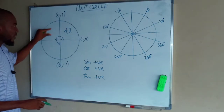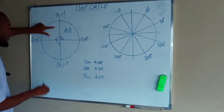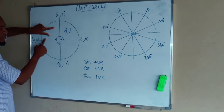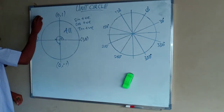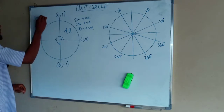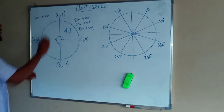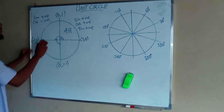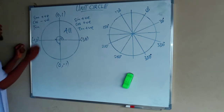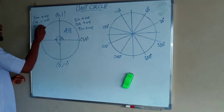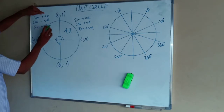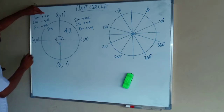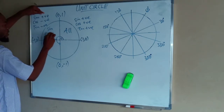Now let us check the second quadrant. The second quadrant depends on positive values of y and negative values of x. Sine here depends on the y-plane, so it is positive. Cosine depends on the x-plane, which is negative here. Tan is positive divided by negative, which is negative. Only sine is positive here, and its inverse, which is cosecant, is also positive.